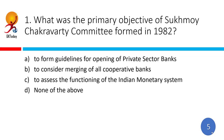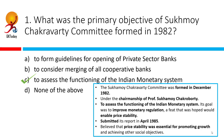What was the primary objective of the Sukhumaya Chakravarti Committee formed in 1982? The correct answer is to assess the functioning of the Indian Monetary System. The committee was formed in December 1982 under the chairmanship of Professor Sukhumaya Chakravarti. It submitted its report in April 1985, with the aim to improve monetary regulation to enable price stability, which would promote the growth of the country and achieve other social objectives.